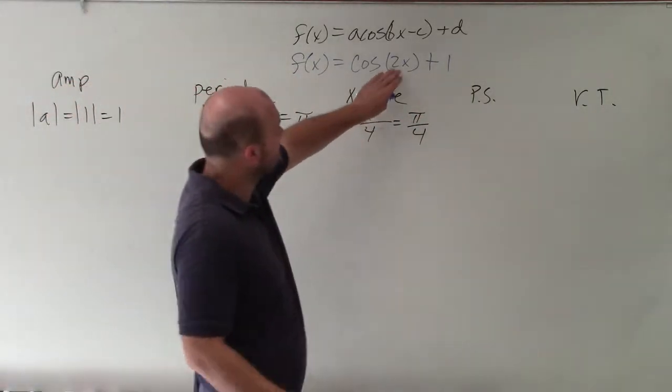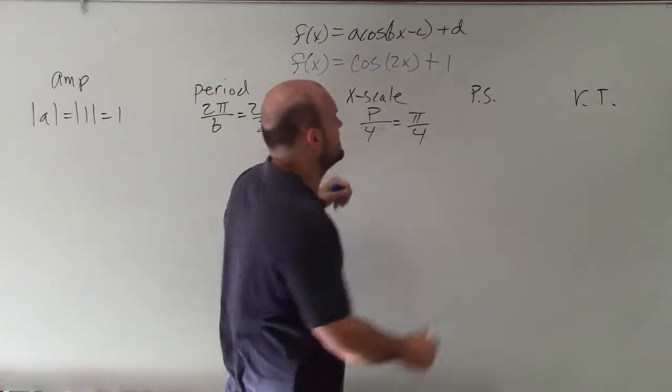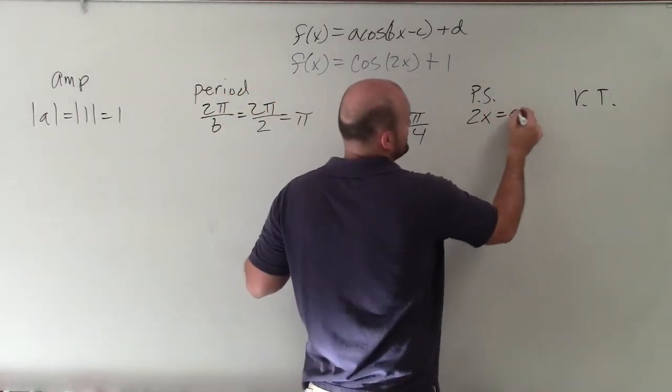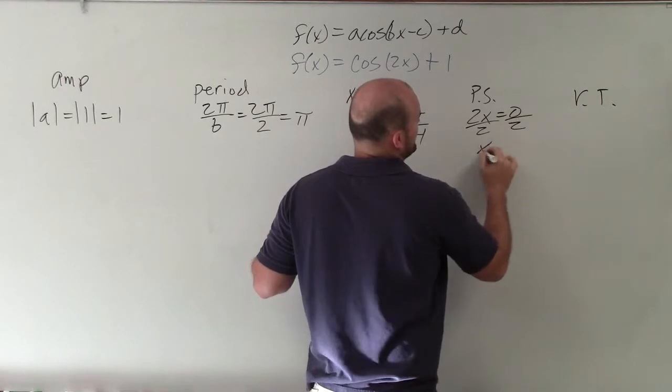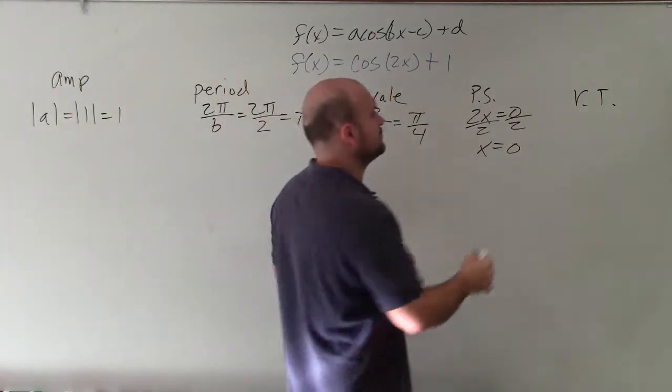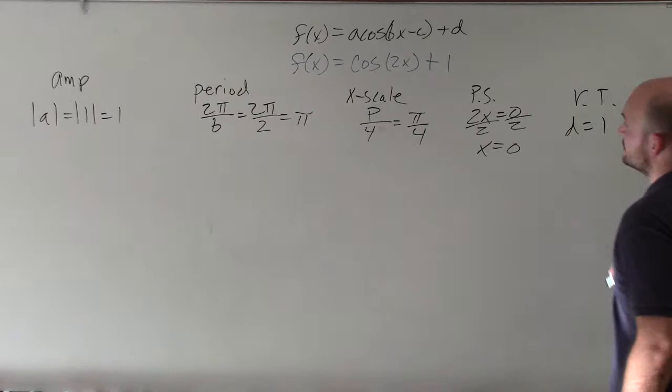My phase shift is going to be taking what's set inside my parentheses, set equal to 0. So I just say 2x is equal to 0, divided by 2, x equals 0. And my vertical transformation is going to equal to d, which in this case is 1.